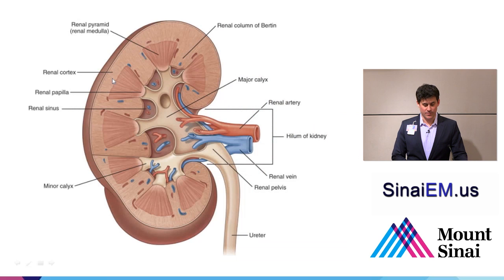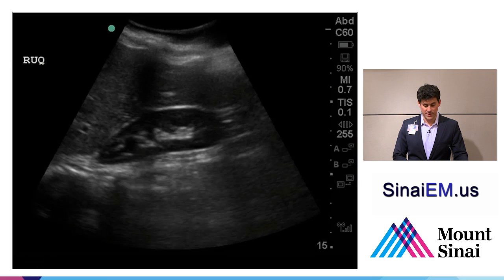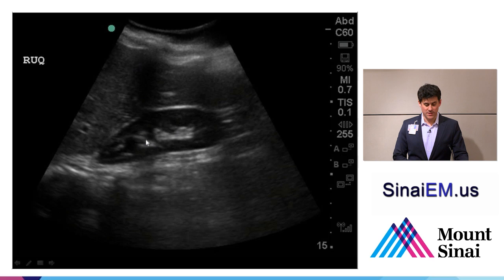Externally, we see Gerota's fascia around the outside of the kidney. The cortex forms the outer margin of the kidney. Inside, we see the calyces within the inner aspect, forming the inner part of the collecting system. That goes into the renal pelvis and then down into the ureter. On ultrasound, we can see the Gerota's fascia as this bright white area in the right upper quadrant, with outer cortex, inner medulla, and collecting system visible as darker areas.